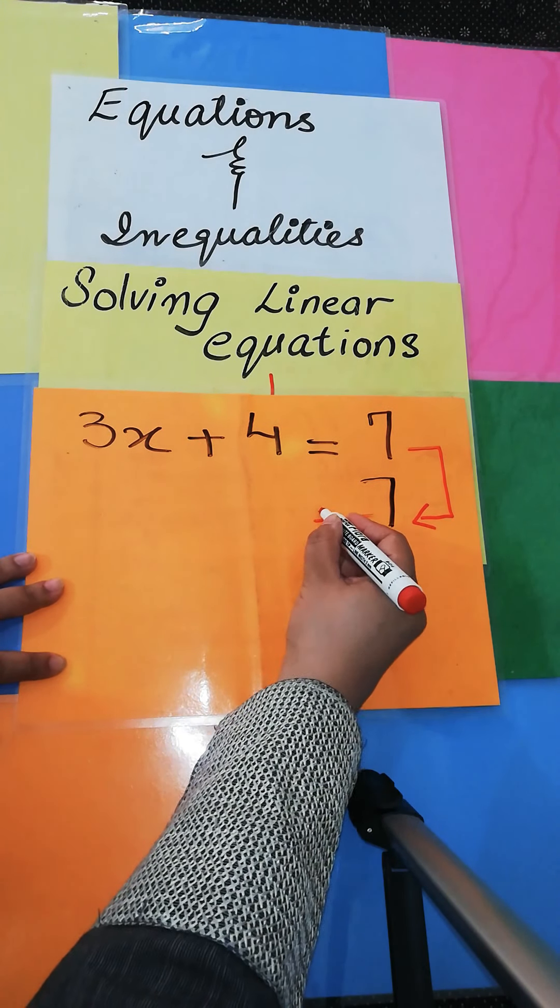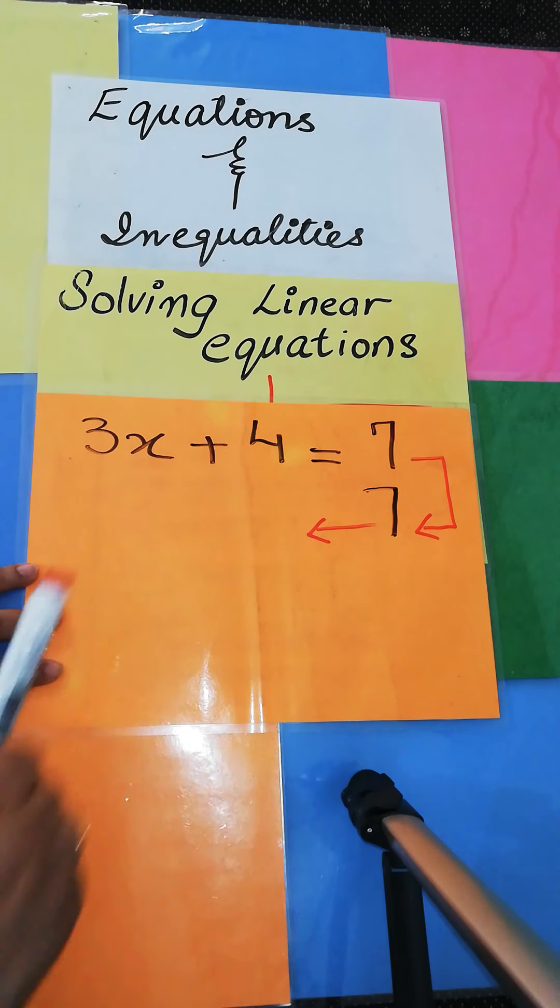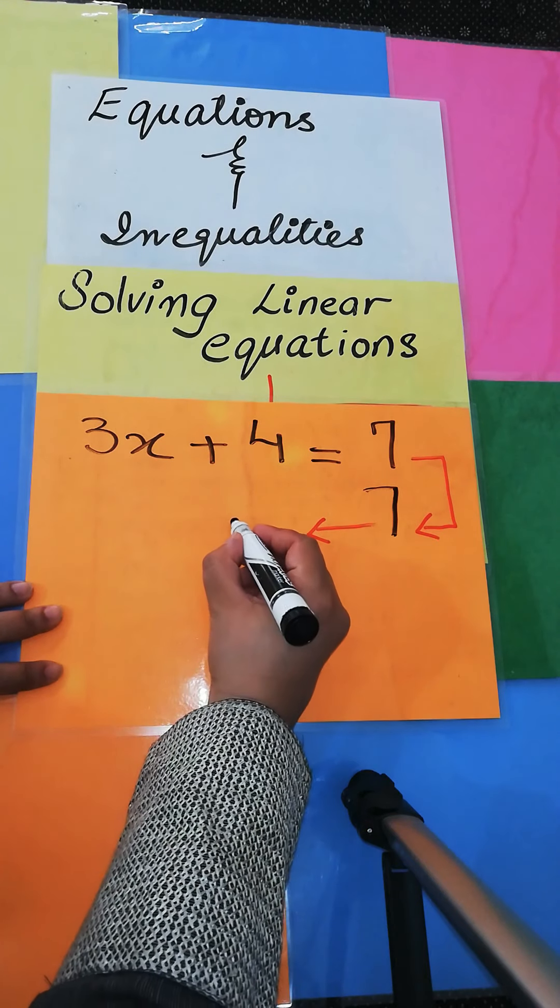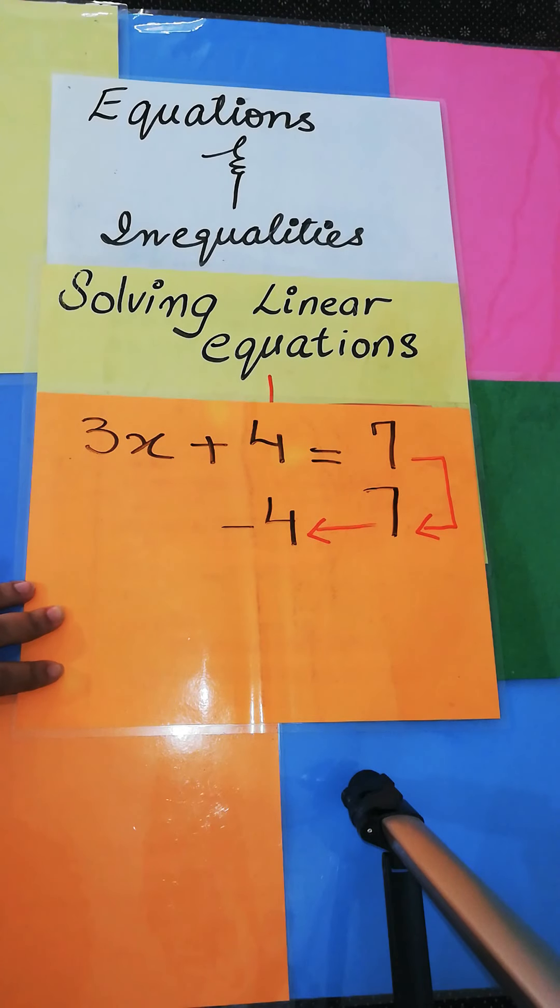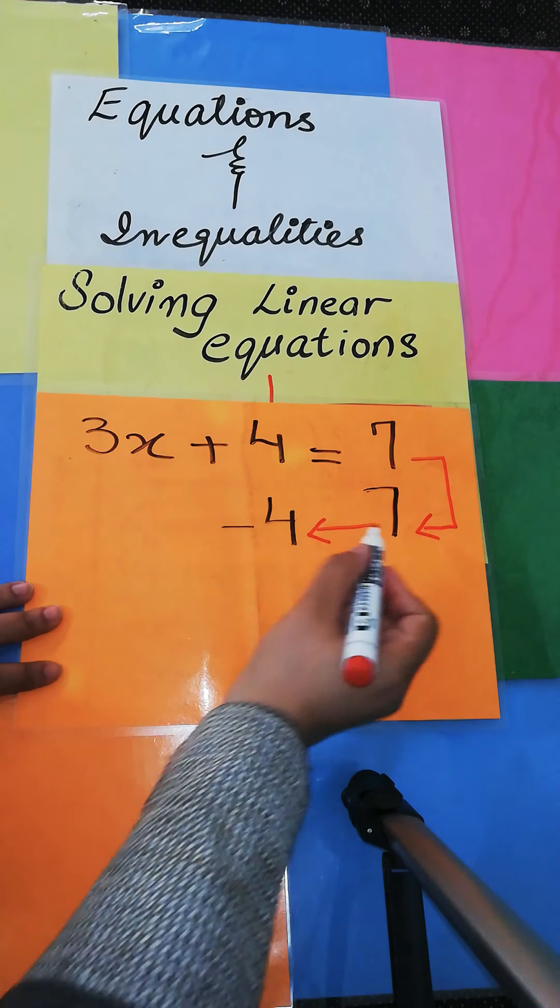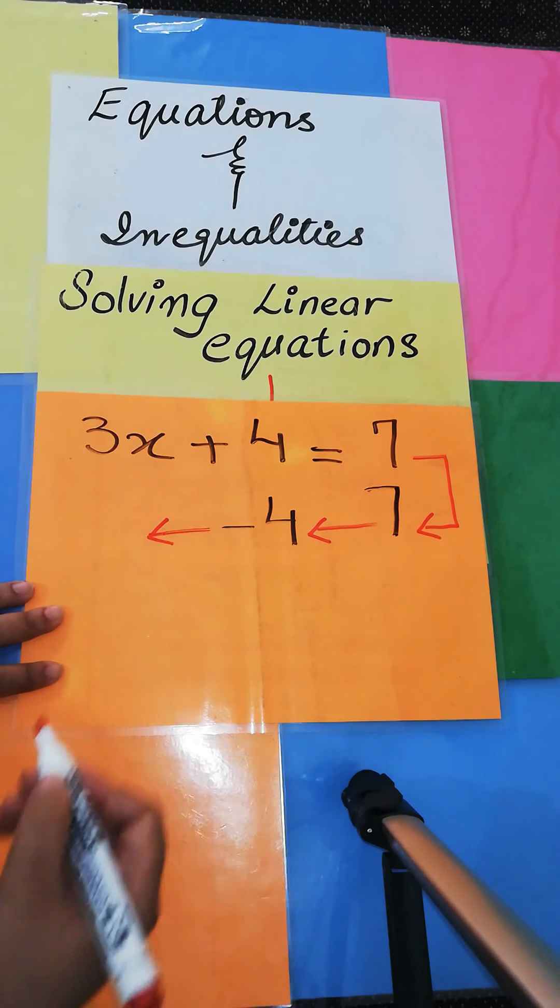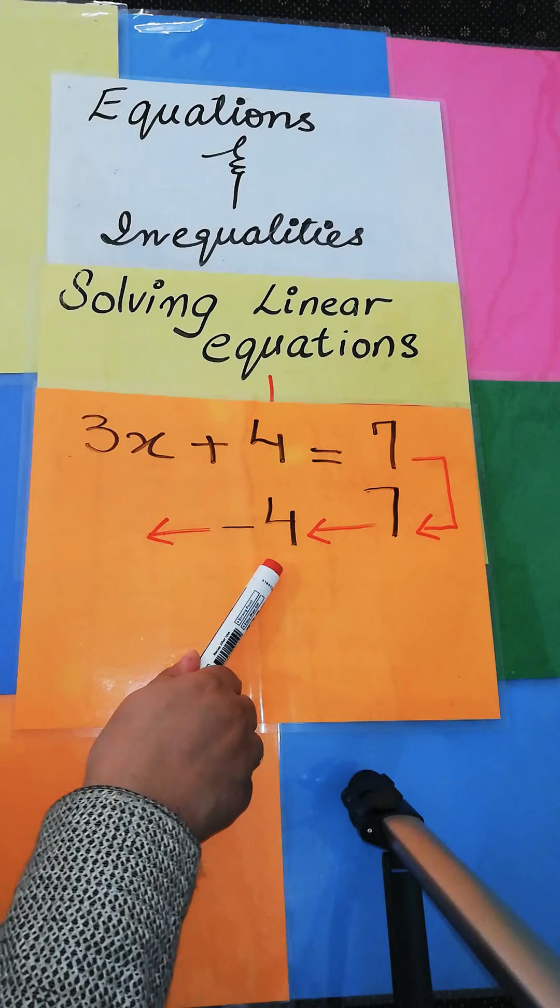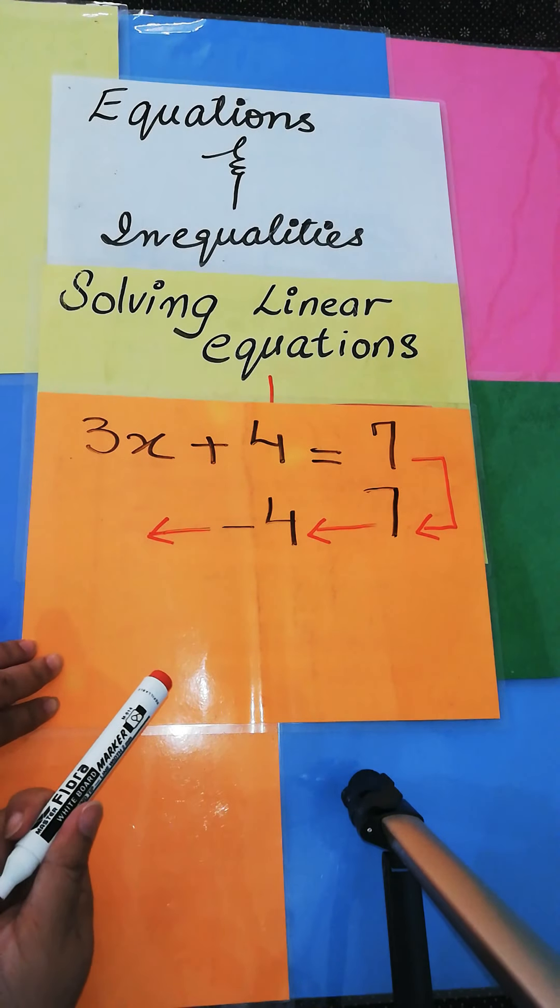However, when we are going to move towards the left-hand side, this plus 4, as this is plus 4, the inverse of plus 4 is going to be minus 4. What is 7 minus 4? 7 is positive, this is minus 4 negative, 7 minus 4 is 3.